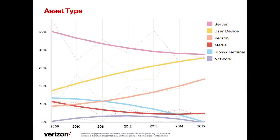On asset types: the 'person' category is largely a result of phishing. Servers are coming down. User devices are on the rise. There's been a lot said about IoT — this year we did not have any specific data with regards to IoT. We're not saying it's not a focus area, but we are reliant on the data we receive. As we get more data associated with mobile devices, we'll hopefully provide a better perspective on those areas as well.